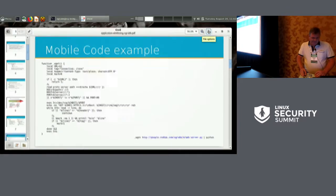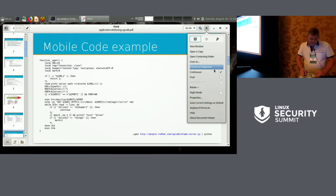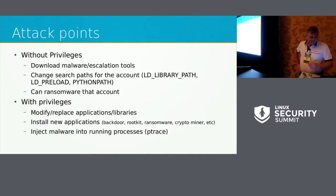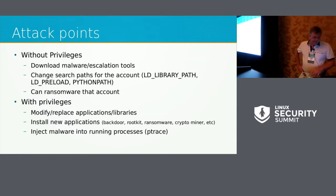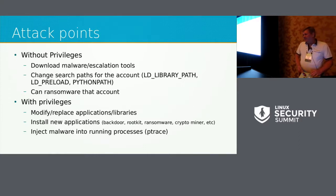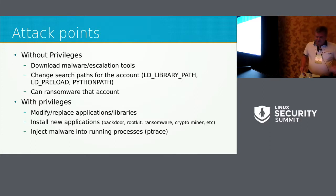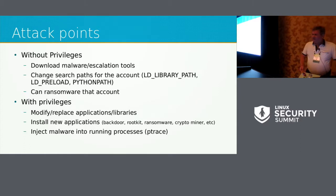Let's go back to white hat. Without privileges, what an attacker can probably do is download malicious escalation tools, change search paths for an account so it resolves things out of an attacker-controlled directory, and ransomware the account. With privileges, they can modify and replace applications or libraries, install new applications — backdoors, rootkits, ransomware, crypto miners, everything — or inject malware into a running process using ptrace.